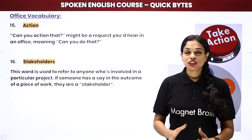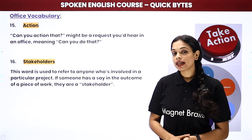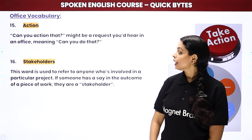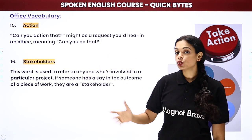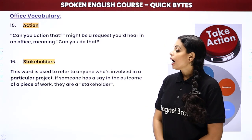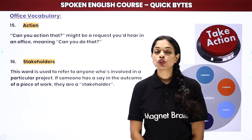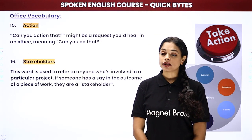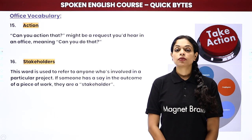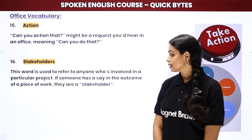Next is action. 'Can you action that?' means 'Can you do that?' — it's used when you've given someone a task. Then we have stakeholders. Every company, when it raises money from the market, its shares go to the public. Anyone — whether on the board of directors or the general public — who holds shares of your company is called a stakeholder.